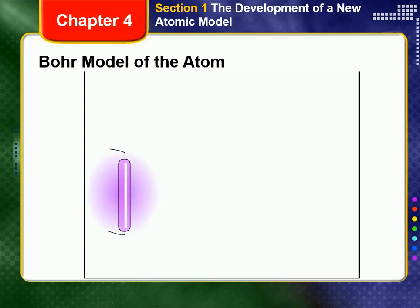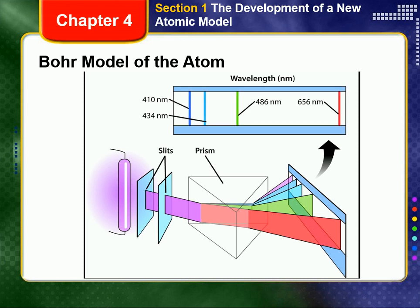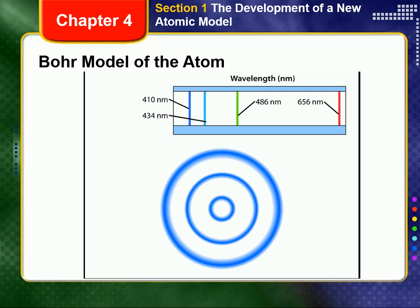In the late 19th century, scientists observed that a characteristic lavender light was produced when a high voltage electric current was passed through hydrogen gas. When the lavender light was sent through a narrow slit, then through a prism, it separated into distinct lines of different colors. In 1913, the Danish physicist Niels Bohr proposed a model of the hydrogen atom that explained atomic spectra.